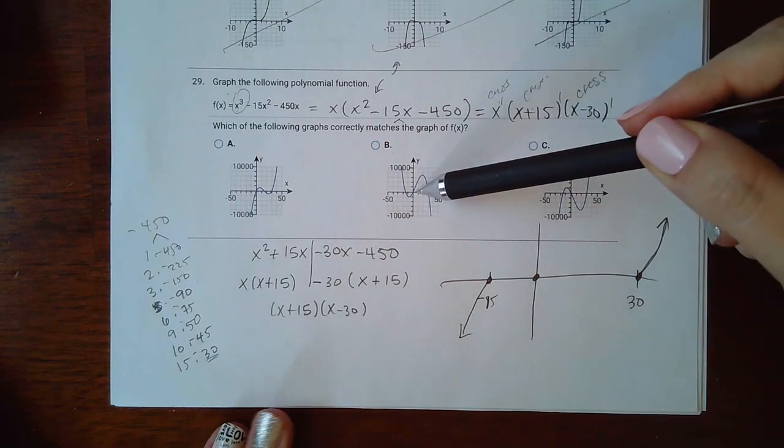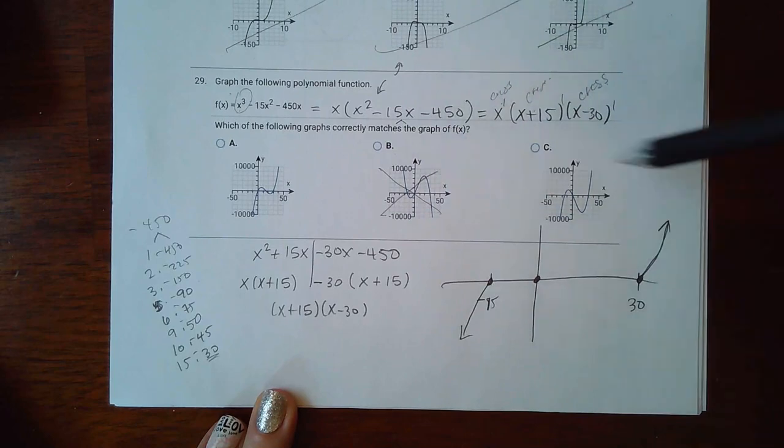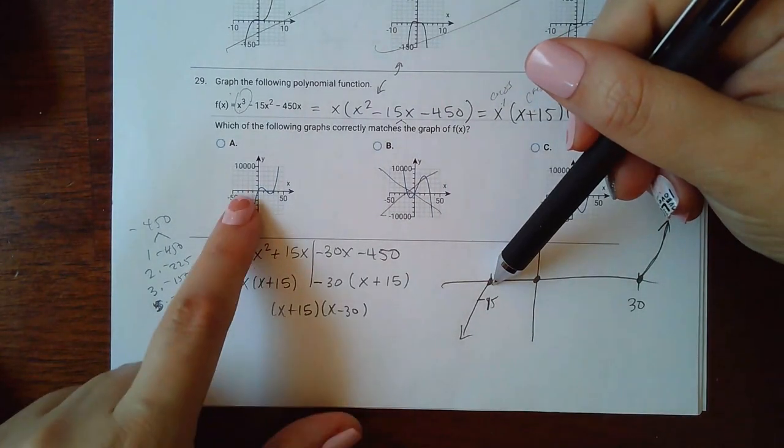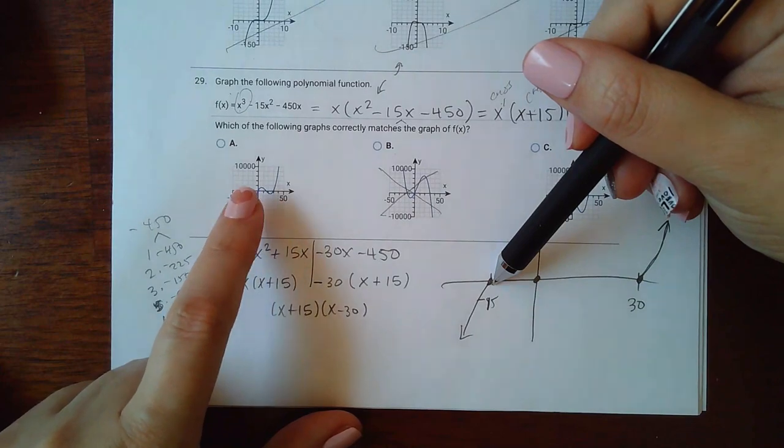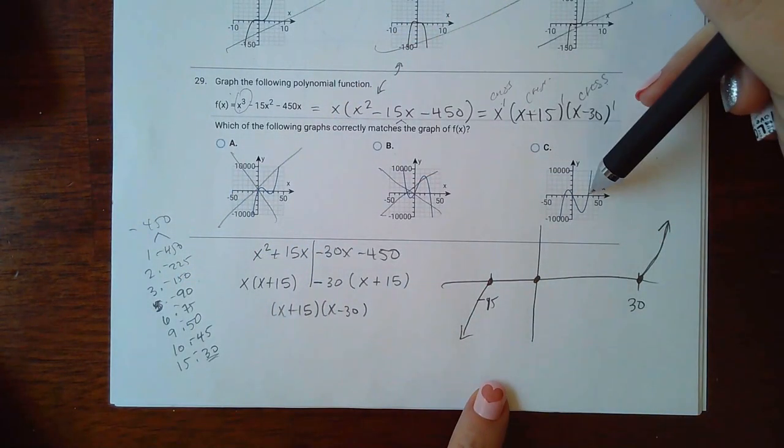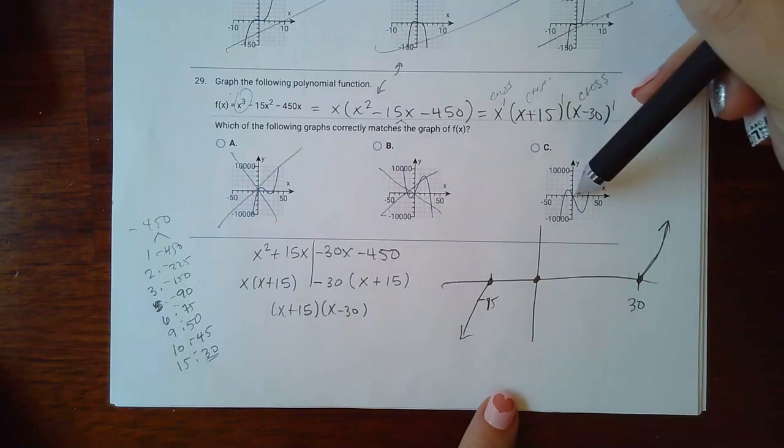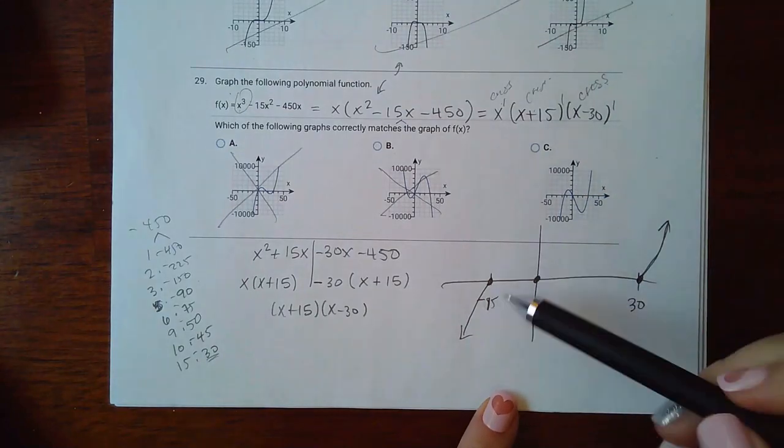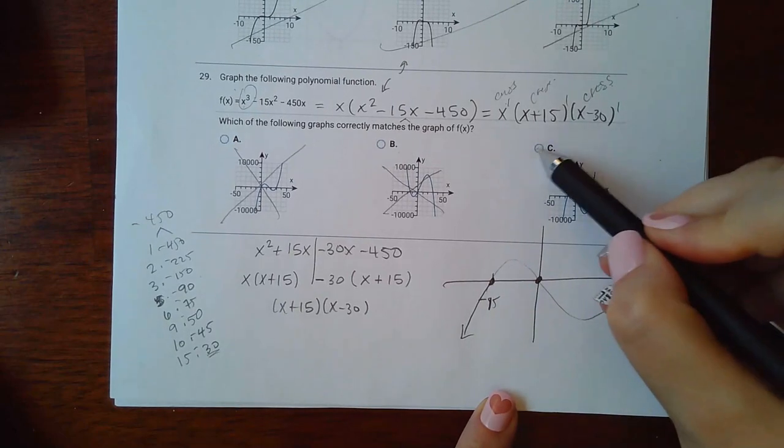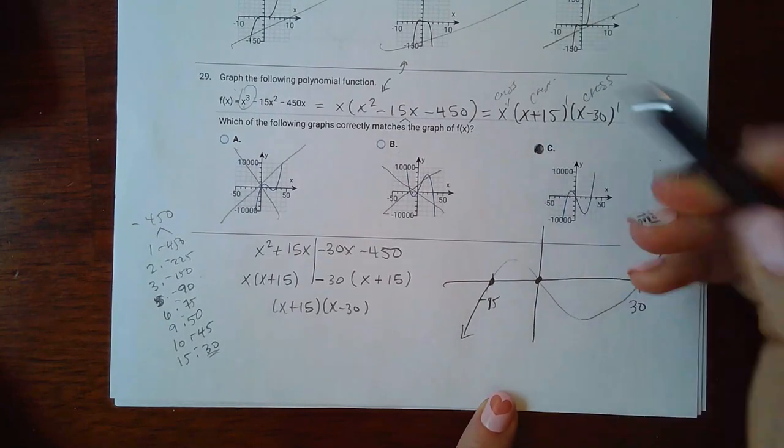So notice this one does not have the right end behavior. I don't know what D looks like, but let's see. At negative 15, I don't have an x-intercept over there, so it's not going to be that one. Here I do have one, and then here I have one at 30. So it's most likely this one. And so it's crossing, and then crossing, and then crossing through there. So it's going to be C.